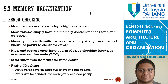There are two topics under Memory Organization. The first one is error checking and the second one is byte ordering. Under error checking, in the memory we need to perform error checking due to the possibility of data being lost when stored inside your computer. Most memory available today is highly reliable, so most systems simply have the memory controller check for error detection.